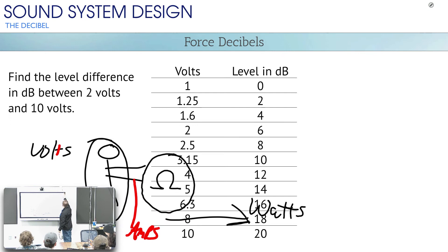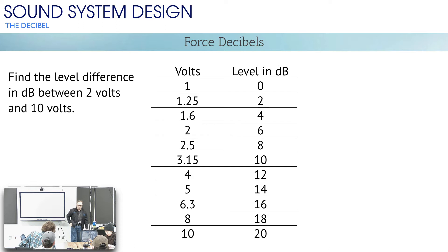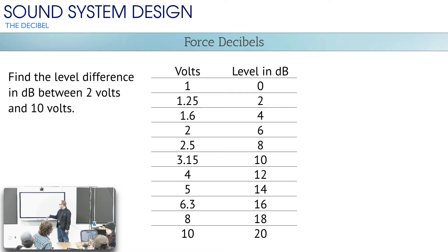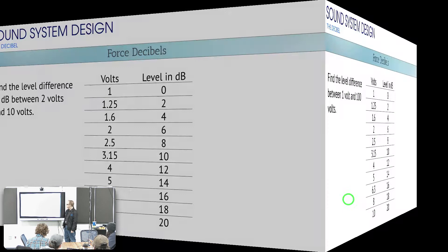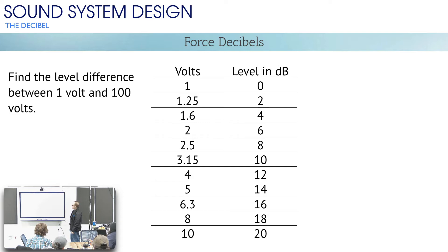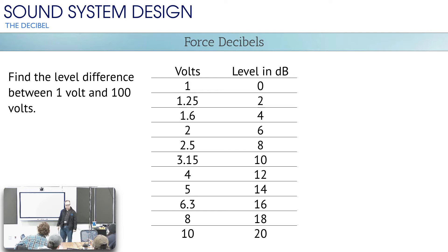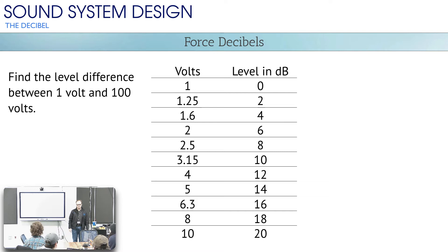Let's do a couple of bits of math. The dB difference between 2 volts and 10 volts: 2 volts is 6 dB and 10 volts is 20 dB — that's a difference of 14 dB. The dB difference between 1 volt and 100 volts: 1 volt to 10 volts is 20 dB, and 10 volts to 100 volts is also 20 dB, so it's a total of 40 dB difference between 1 volt and 100 volts. It's non-linear — it's logarithmic.